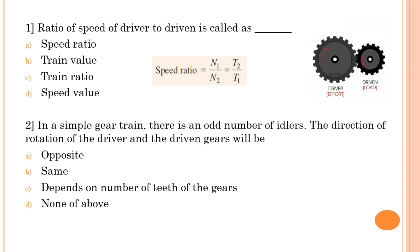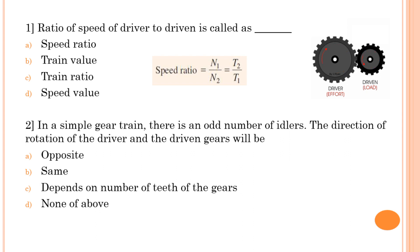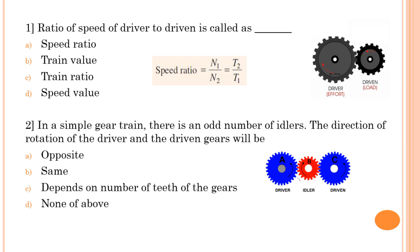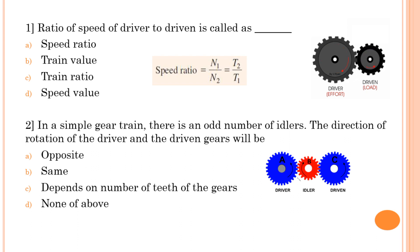Second question: in a simple gear train there is an odd number of idler gears — the direction of rotation of driver and driven gears will be? Consider a simple gear train with gears A, B, C where one gear is mounted as an idler. Gear A rotates anticlockwise; gear B meshes externally with A so B rotates in the opposite direction — clockwise.